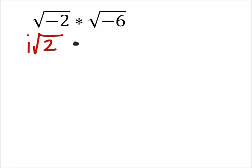And I'm going to multiply this by, the square root of negative 6 would be i times the square root of positive 6 now.